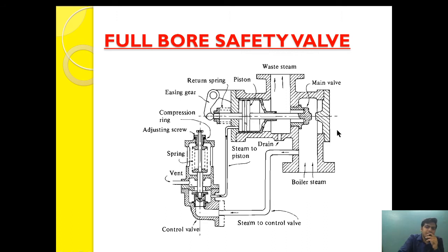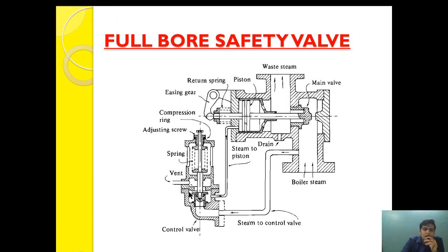As you can see in this design, the return spring is not in direct contact with the escaping waste steam, and hence it prevents distortion of the spring. Second, because the operating piston area is much larger than the main valve, it provides sharp opening. Sharp closing of the valve is provided with the help of the return spring. The operational control is provided by the control valve, which has a vent that vents the top part of the system when the valve is closed.